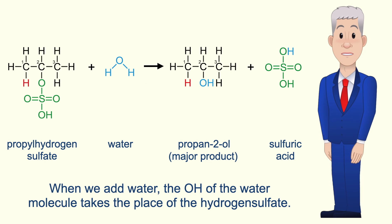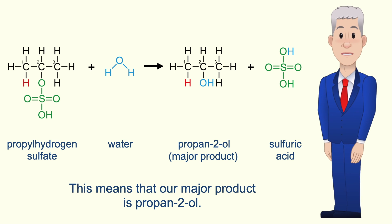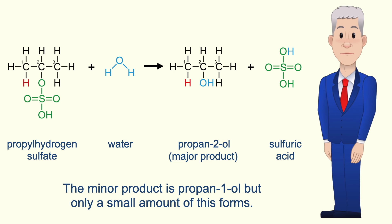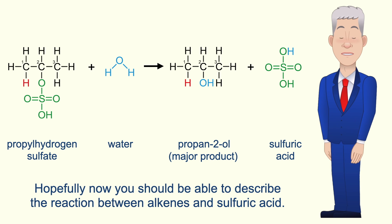Now when we add water, the OH of the water molecule takes the place of the hydrogen sulfate. So this means that our major product is propan-2-ol. The minor product is propan-1-ol, but only a small amount of this forms. So hopefully now you should be able to describe the reaction between alkenes and sulfuric acid.